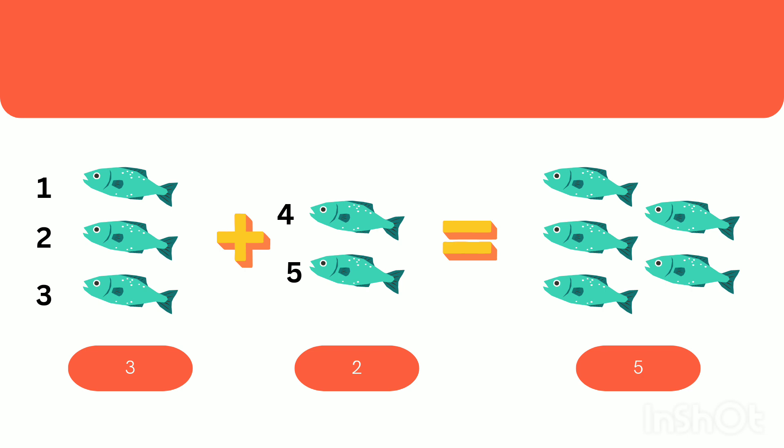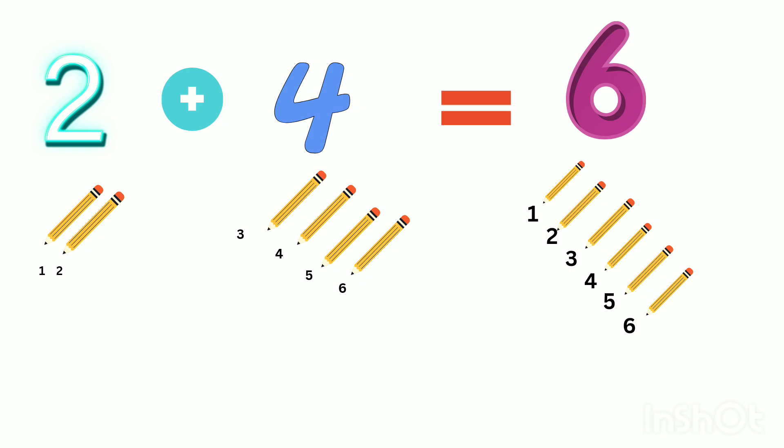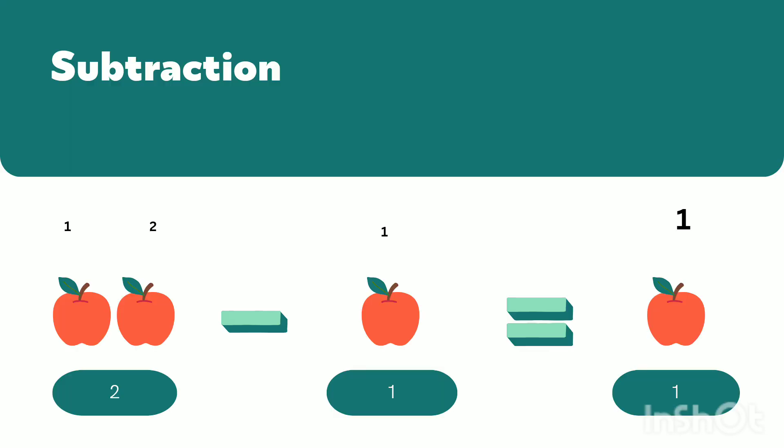five fishes. Three plus two gives five. Here we have some pencils: two plus four gives six. Two pencils plus four pencils gives six pencils totally. Let's count together: one, two, three, four, five, and six. Totally we have six pencils. Two plus four gives six. Now let's see examples for subtraction.